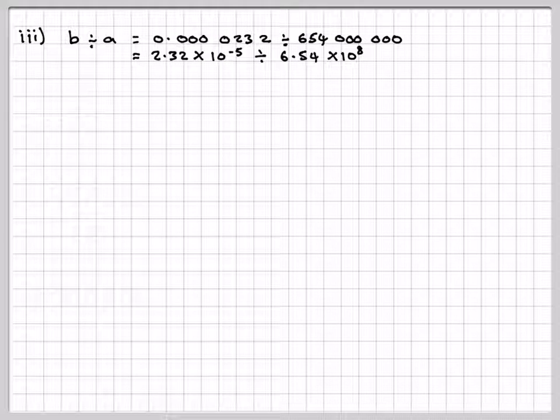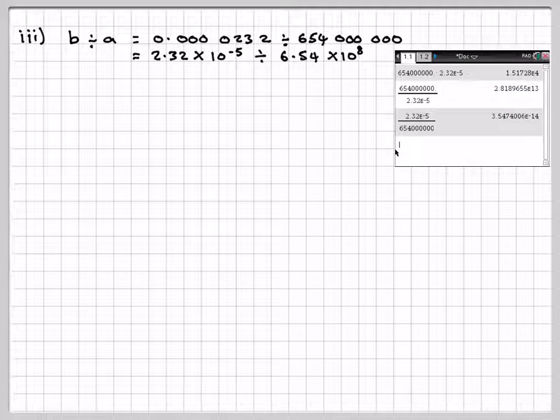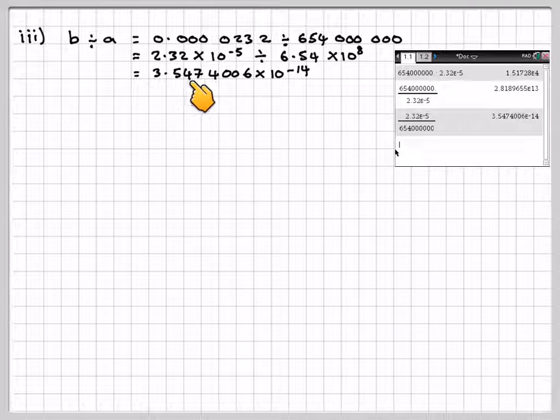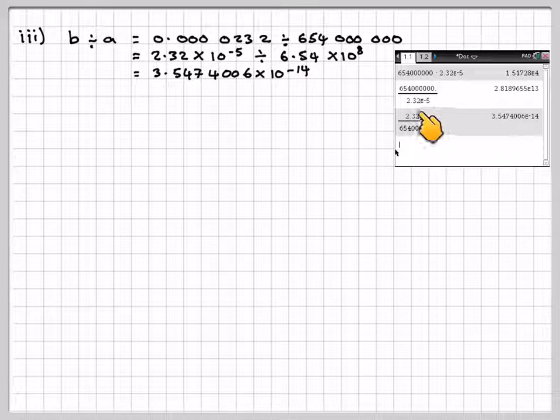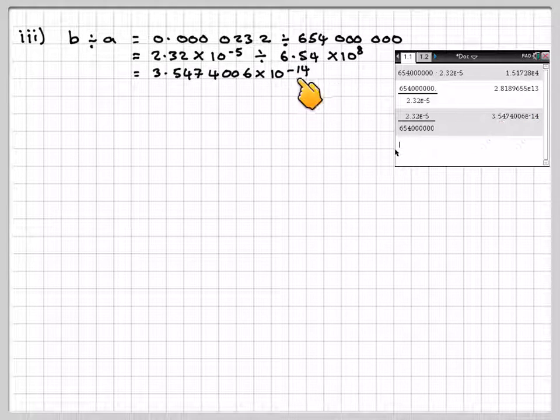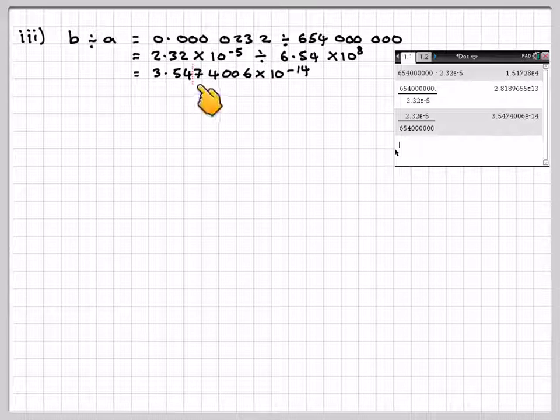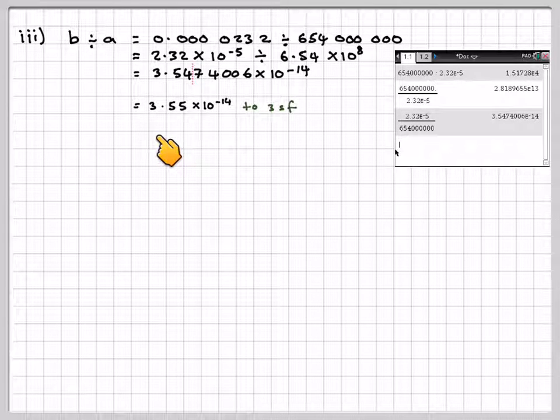So going back to our exam script, here's the screenshot. So writing down the full calculator value, 3.544006 times 10 to the minus 14. Do not write E. My mistake is to do that. 3 significant figures, 1st, 2nd, 3rd. A line there. That 7 makes a 4, a 5. So the final answer will be 3.55 times 10 to the minus 14 to 3 significant figures.